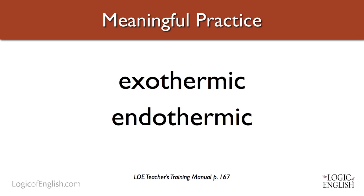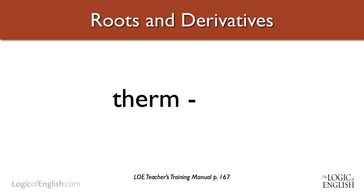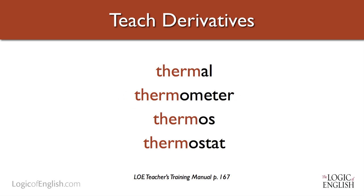In science class, students struggle to remember exothermic and endothermic — how can we help them remember which is which? First, teach them the root 'therm,' which means heat, and draw connections with words they already know: thermal, thermometer, thermos, thermostat. All of these have to do with heat. So exothermic and endothermic have something to do with heat — they don't need to rote memorize these big words. In fact, big science words are almost all Latin roots, and if you learn the meanings of the roots, you'll have a tremendous edge in the sciences.